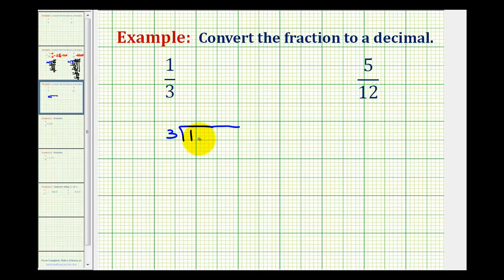And now if we put a decimal point after the one here on the right and move it up into the quotient, we can add zeros to the right of the decimal point without changing the value of one. And now we can divide for as long as we need to until the decimal terminates or repeats with the pattern.